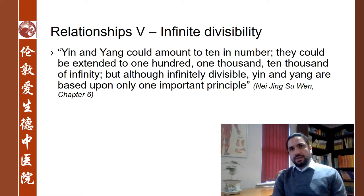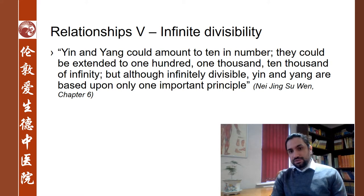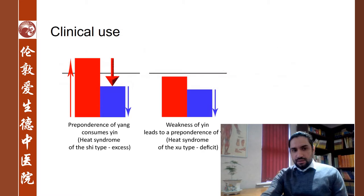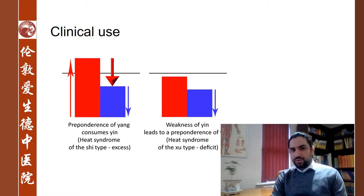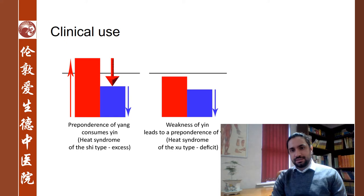An example would be steam — we can look at it as a yang manifestation, but within that manifestation there's still water, still yin, still a material component to it. In clinical practice, we use ideas such as excess or deficiency of one or the other. We often hear the idea of a real excess or a relative excess — or more often, we hear about this as empty heat.